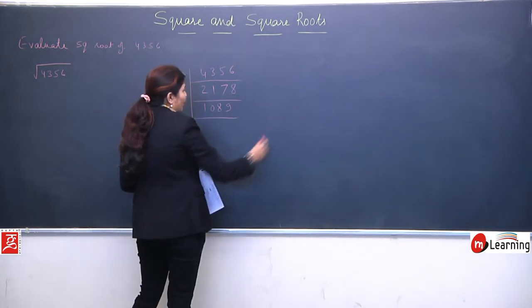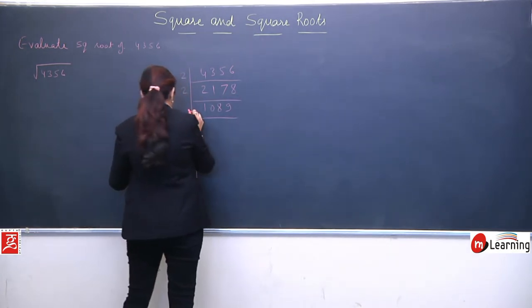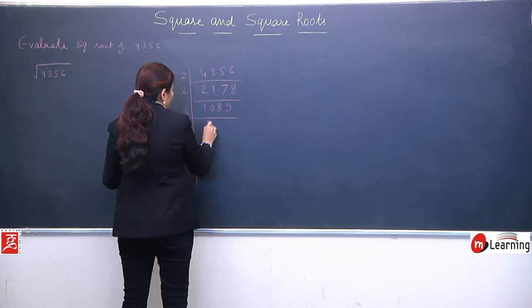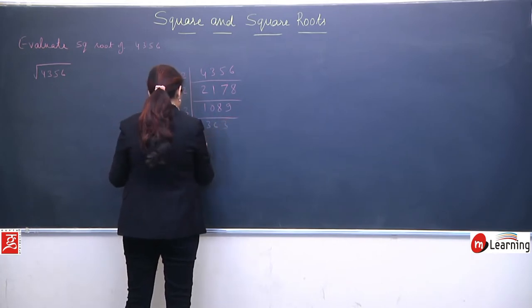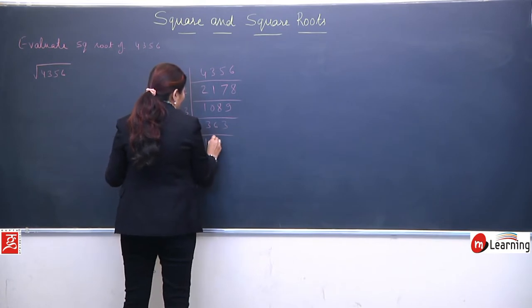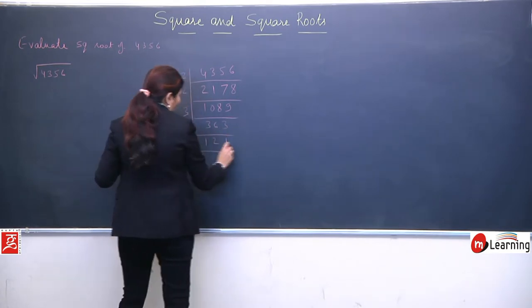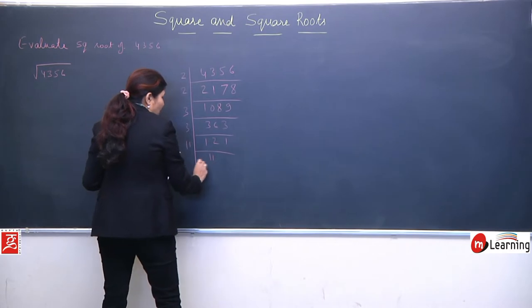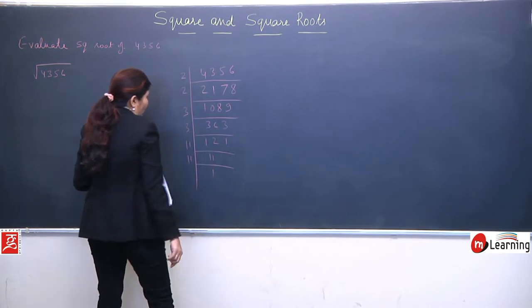Next division will be by 3. 3 threes are 9, 3 sixes are 18, 3 threes are 9, 3 ones are 3, 3 twos are 6, 3 ones are 3. And 121, which is divisible by 11 only.